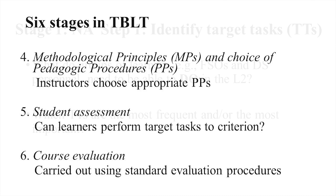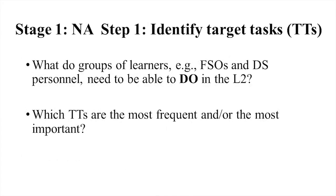Your next talk in this series, which Cathy Dowdy is going to give, is on how you go about identifying target tasks, so I'm going to mostly skip over this today. Just to remind you: there are two steps. What we're trying to find out is not which structures somebody needs, but what tasks they're going to have to do in or through the target language. We also collect data on which tasks are most frequent and which are most important — that's not always the same thing. A task can be critically important when it occurs but doesn't occur that often, and vice versa.